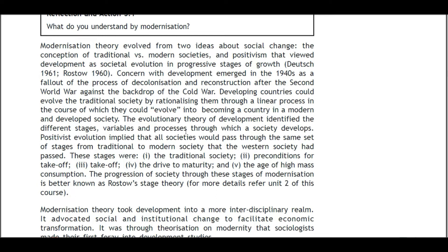The evolutionary theory of development identifies different stages through which society develops. Positivist evolutionism implied that all societies would pass through the same stages that Western societies had passed: traditional society, preconditions for takeoff, takeoff, the drive to maturity, and the age of high mass consumption. This progression is better known as Rostow's stage theory.